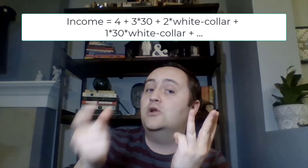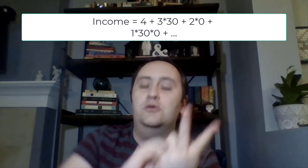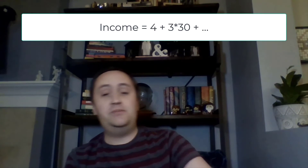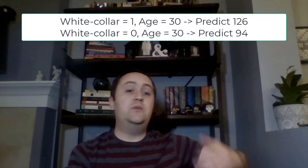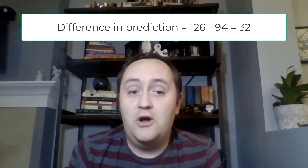Now I compare that to the 30-year-old blue-collar worker by plugging in different values. I still have the intercept of 4, plus 3×30. But white-collar is now 0, so the 2·white-collar term drops out, and the 1·age·white-collar term — which is 1×30×0 — is gone too. All we have is 4 + 3×30 = 94. Subtracting the two predictions: 126 − 94 = 32, so a 30-year-old white-collar worker earns 32 more than a 30-year-old blue-collar worker.